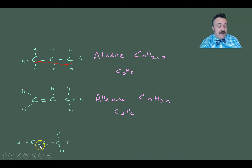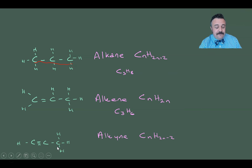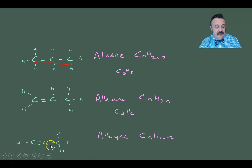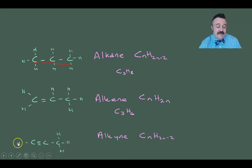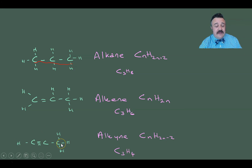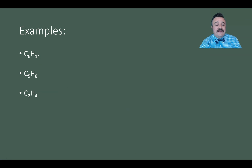Then at the bottom we have an alkyne — we can see the triple bond. With CₙH₂ₙ₋₂ and n = 3, that gives us 2(3) − 2 = 4 hydrogens. So the formula is C₃H₄, and if we tally them up, that's exactly what we get.